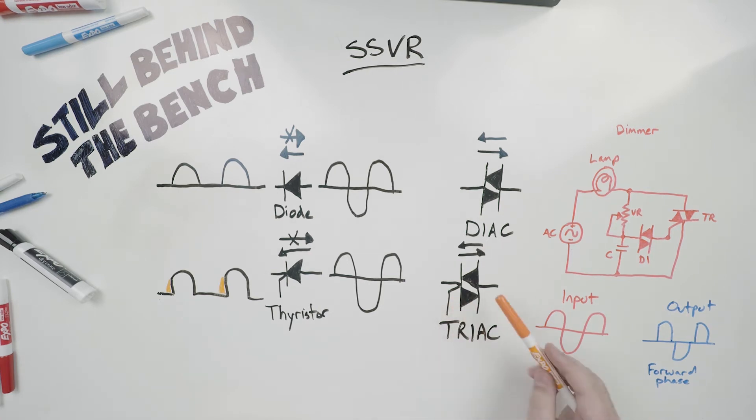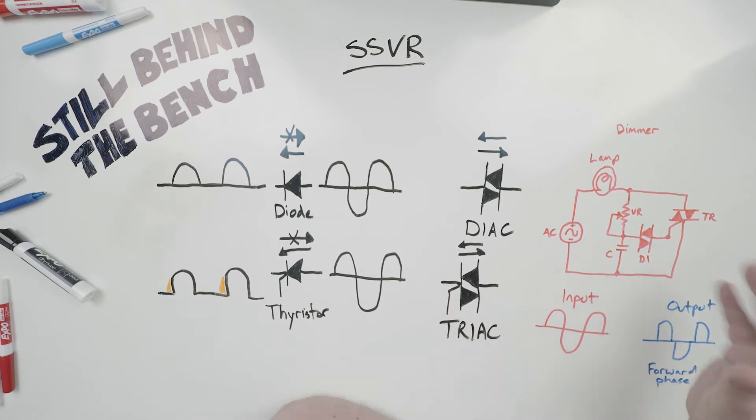So again, if this was set at 30 volts, it would only start conducting once you hit 30 volts on this gate pin. So we'll look at a TRIAC chopper circuit.